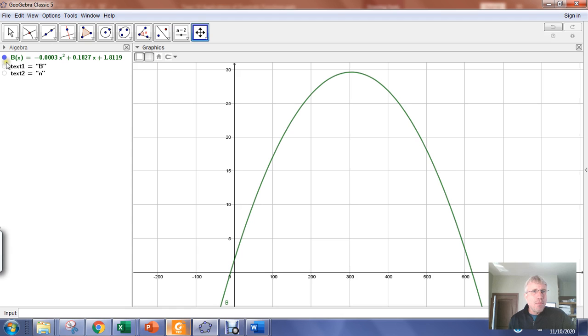So here's a model B of X that we developed in the previous video where we were modeling blades of grass grown as a function of the amount of nitrogen content that was added to the soil.